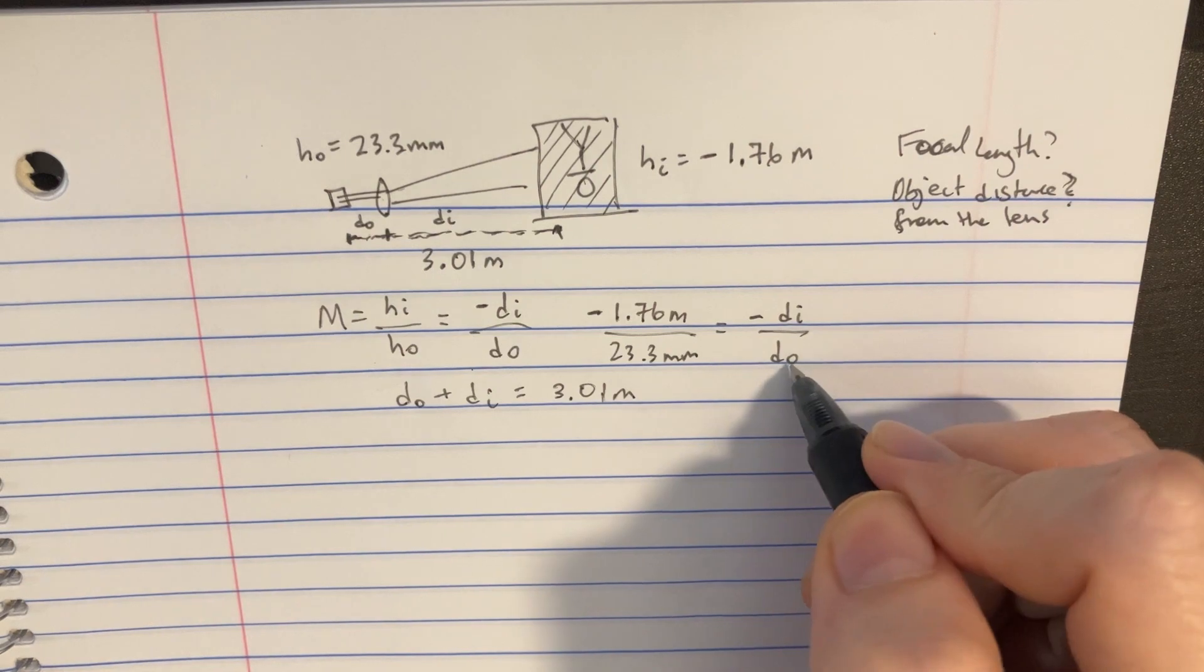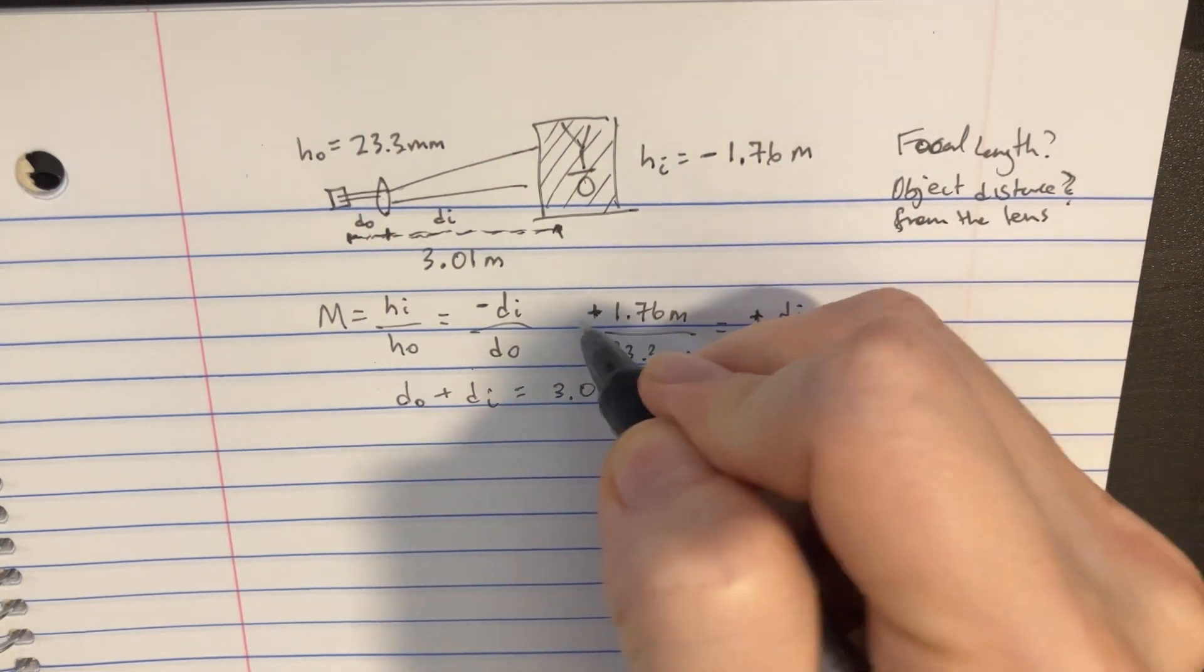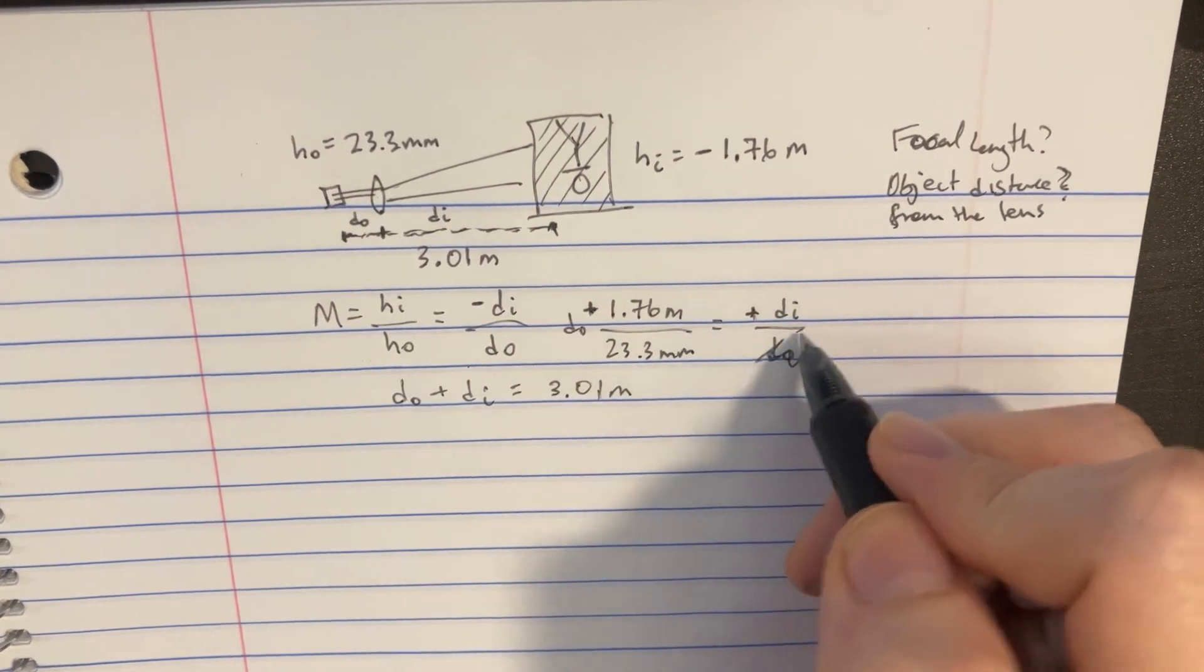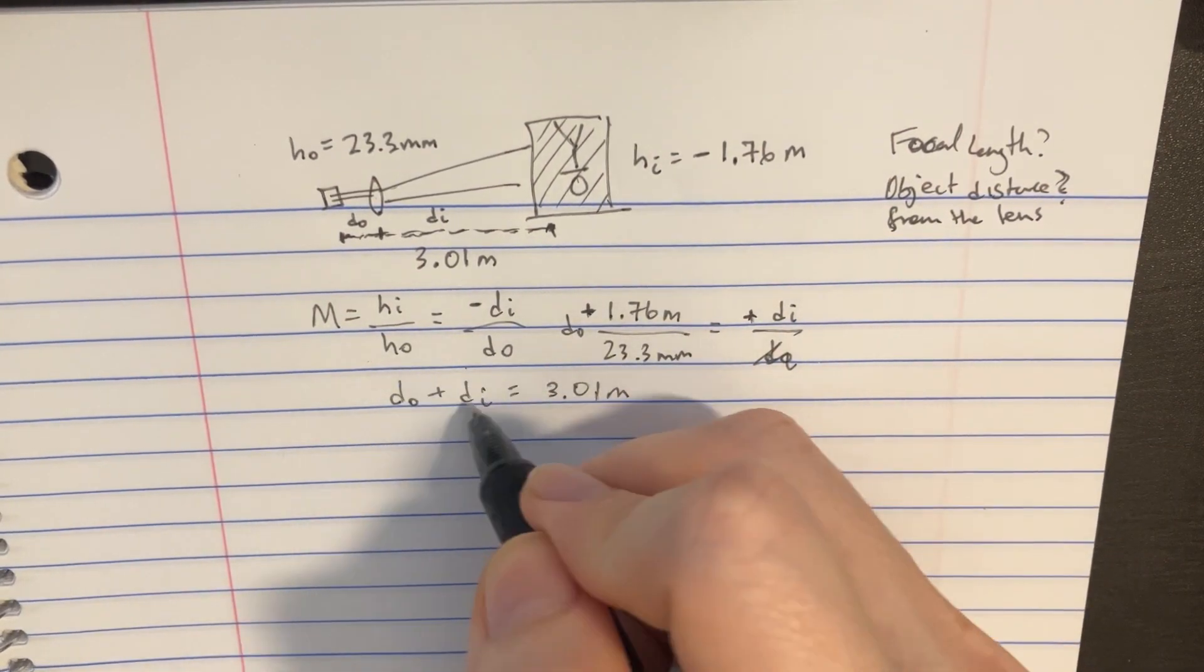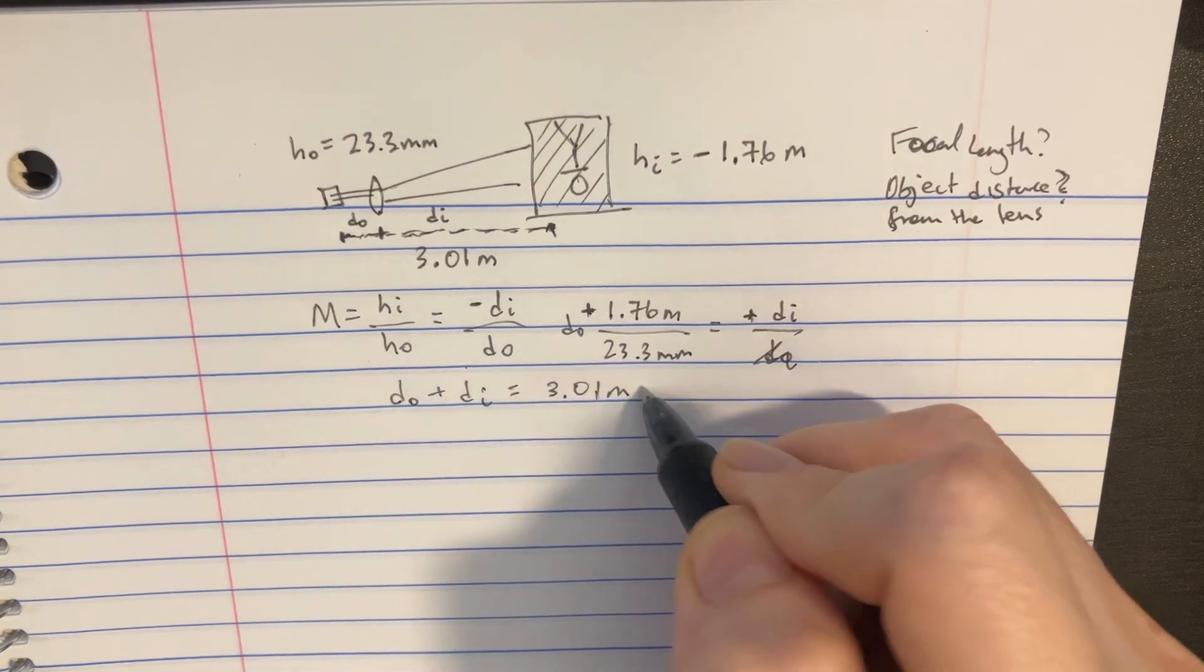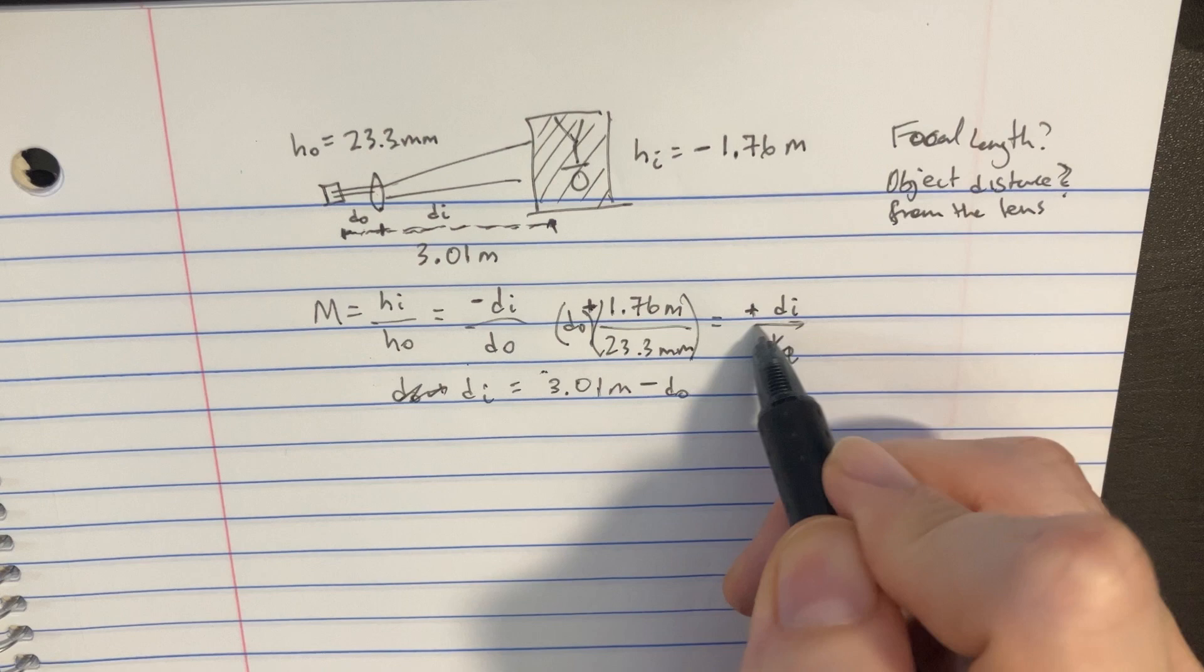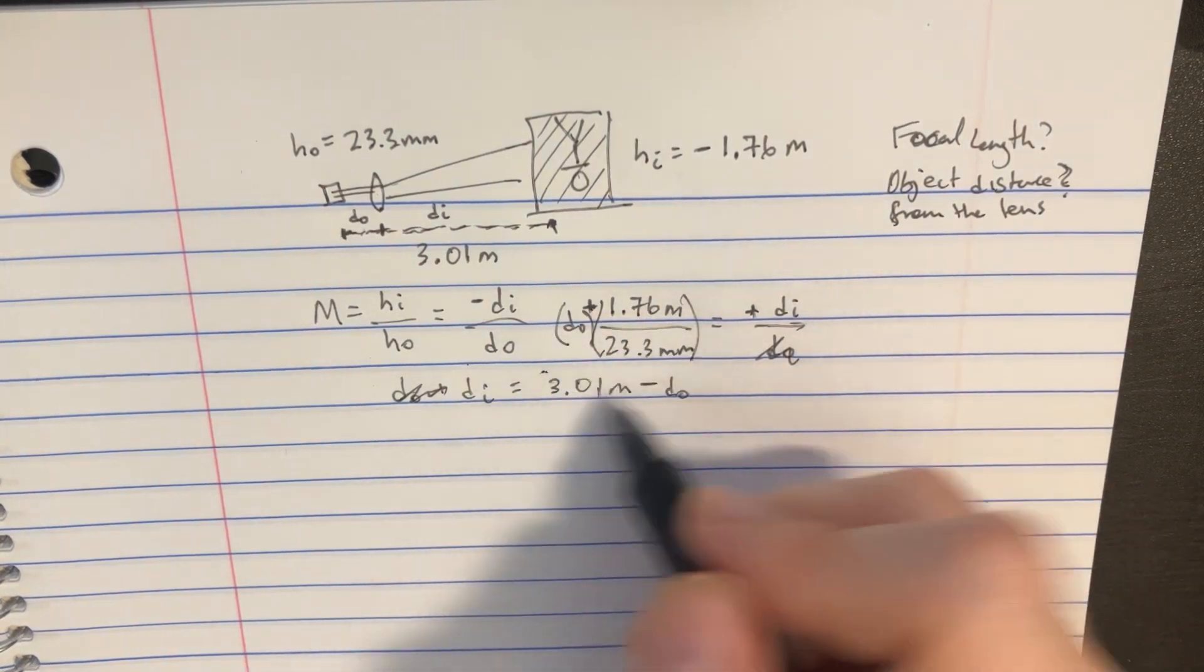So if we isolate this and move the DO to the other side, we can see that DI equals all this. So we want to put this equation in terms of DI. Now we can see that since DI equals all this and DI equals all that, let's just set these things equal to each other.